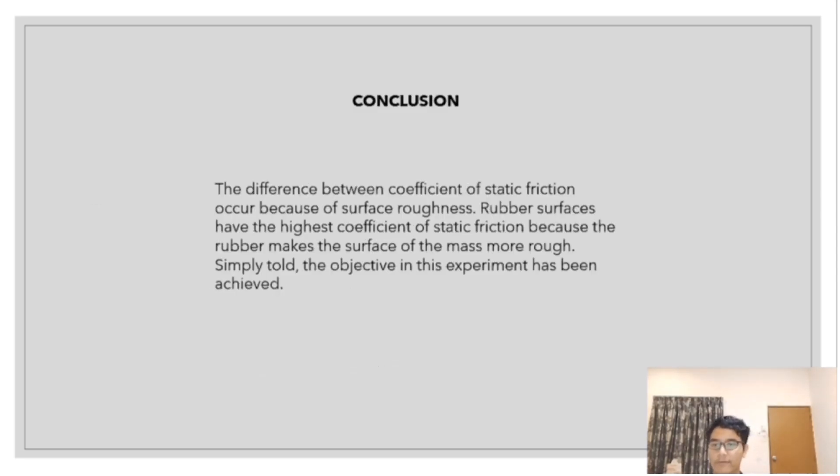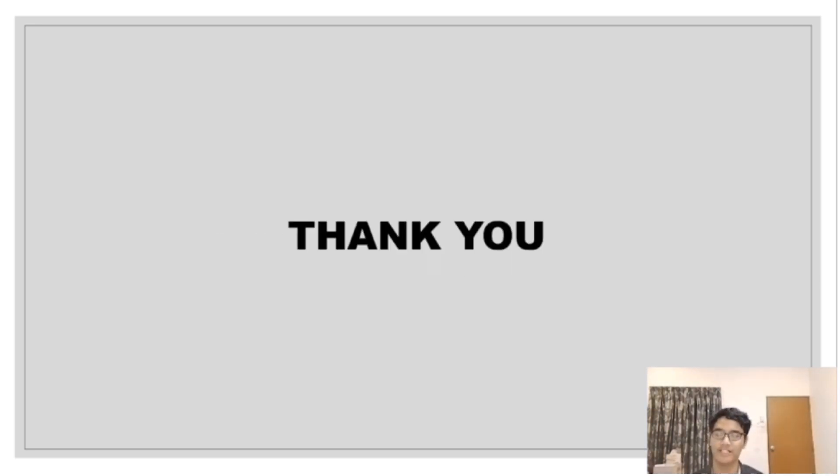Conclusion. The different coefficient of static friction occurs because of surface roughness. Rubber surfaces have the highest coefficient of static friction because the rubber makes the surface of the mass more rough. Simply told, the objective in this experiment has been achieved. That's all for today's presentation. Thank you.